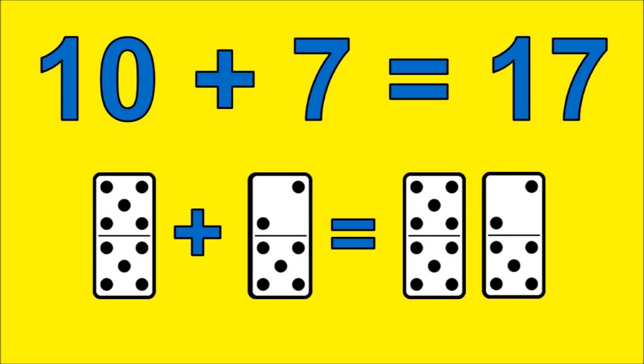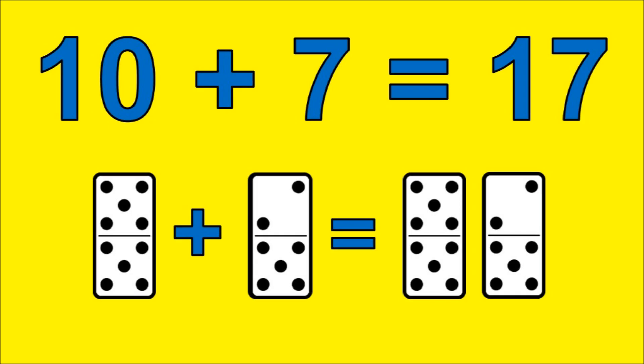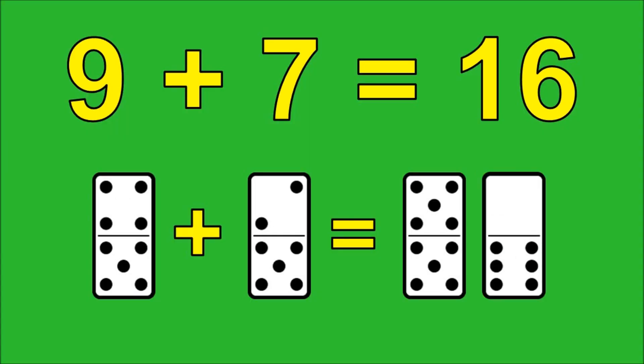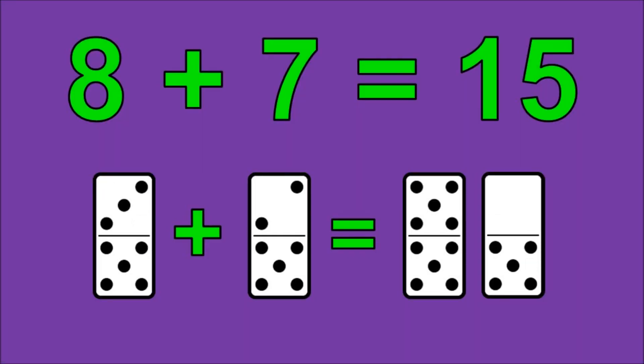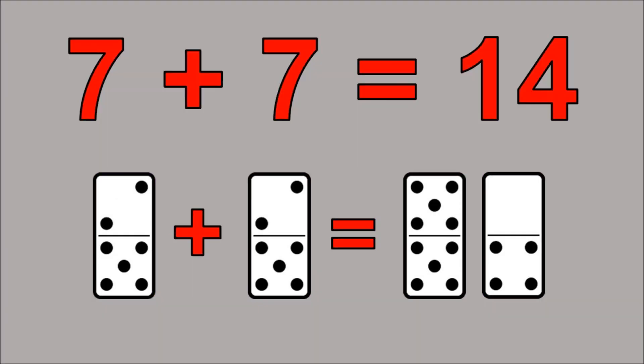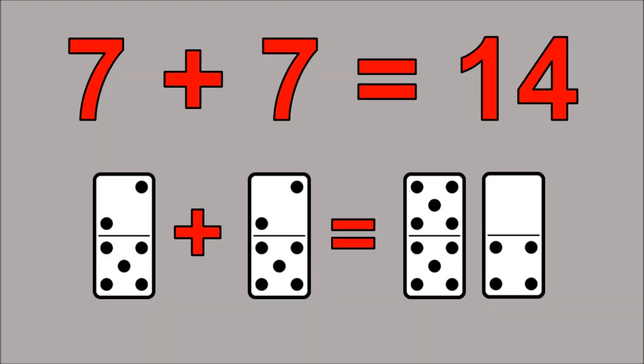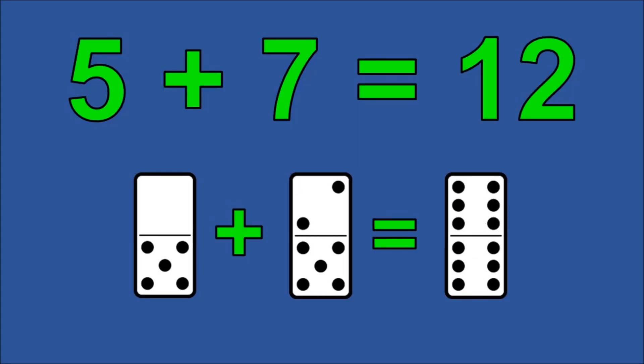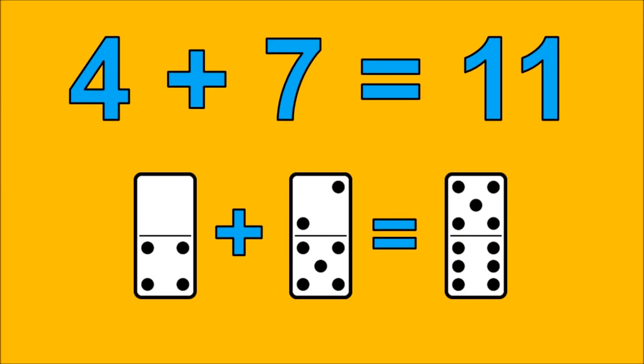10 plus 7 is 17, 9 plus 7 is 16, 8 plus 7 is 15, 7 plus 7 is 14, 6 plus 7 is 13, 5 plus 7 is 12, 4 plus 7 is 11.